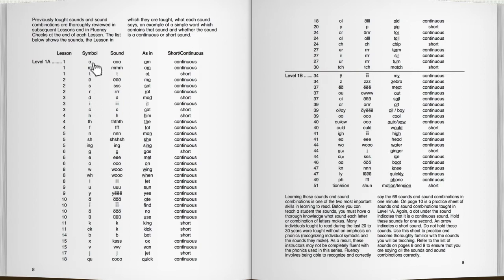In column three, the sound which that symbol or combination of symbols makes is given. In this list, column four provides a common word in which that sound is used. The last column signifies whether the sound is short or continuous.